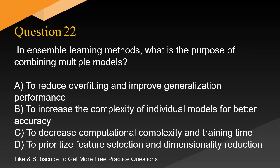Question 22. In ensemble learning methods, what is the purpose of combining multiple models? A. To reduce overfitting and improve generalization performance. B. To increase the complexity of individual models for better accuracy. C. To decrease computational complexity and training time. D. To prioritize feature selection and dimensionality reduction.